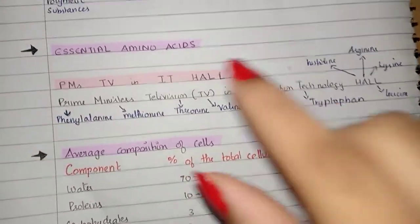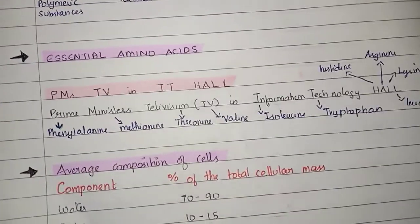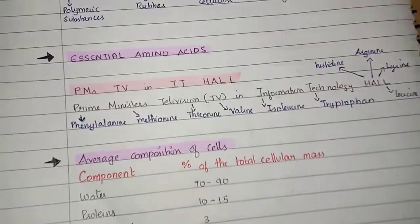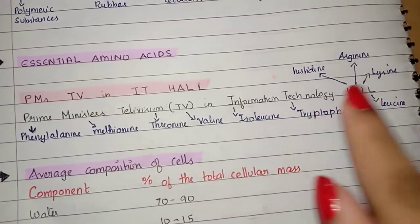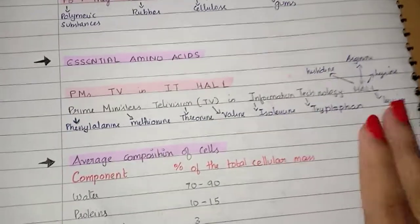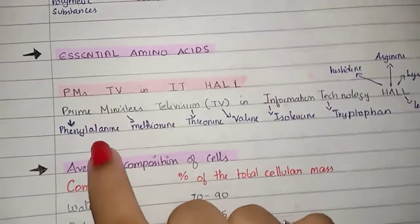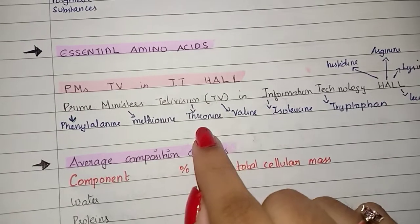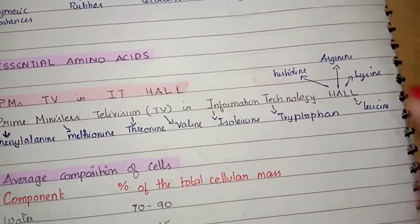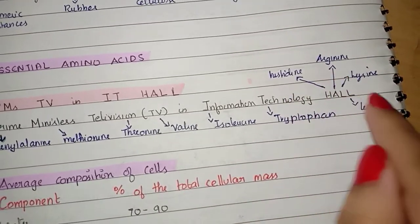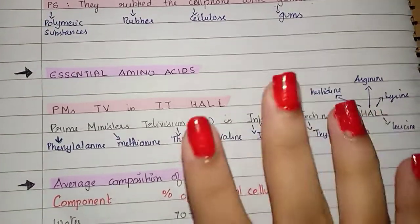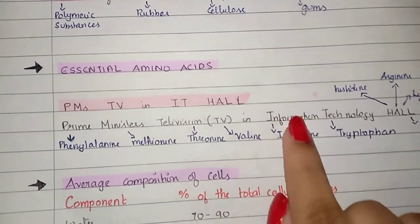Next is essential amino acids. The short trick is 'PM's TV in IT hall' — Prime Minister's television in information technology hall. PM for phenylalanine and methionine, TV for threonine and valine, IT for isoleucine and tryptophan, hall for histidine, arginine, lysine, and leucine.